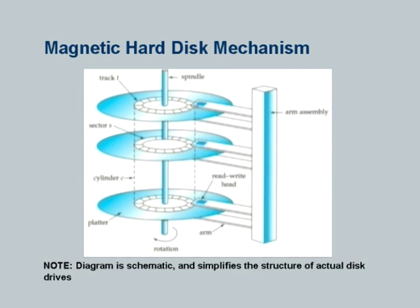We need to understand the characteristics of disks and how they affect how data is stored and retrieved. To understand that, we need to know a little bit about how disks work mechanically. This is of course a schematic diagram. The key thing to note is there is a set of magnetic disks spinning around a spindle at something of the order of 5400 to 7200 revolutions per minute. There is an arm assembly which swings from the inner portion of the disk platter to the outer portion. When the arm is stationary and the disk is spinning, the part which passes under the disk arm is called a track. The set of tracks across all platters forms a cylinder.